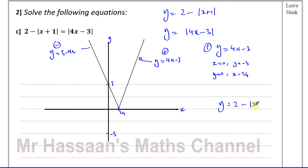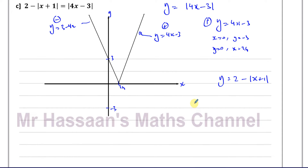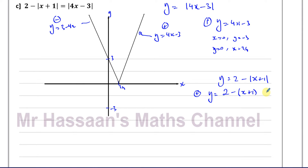Now for the graph of y equals 2 minus the modulus of (x+1), there are a few important points. We can look at the positive argument: keeping everything inside the modulus with the same sign gives y = 2 - (x+1) = 2 - x - 1 = 1 - x. That is the positive argument of this graph.